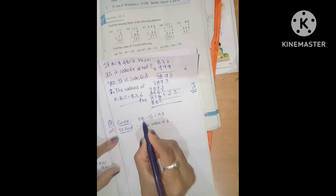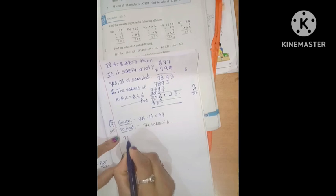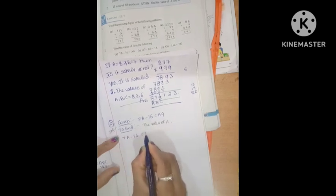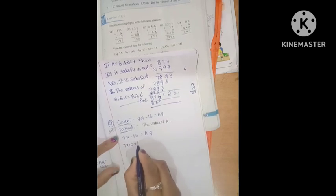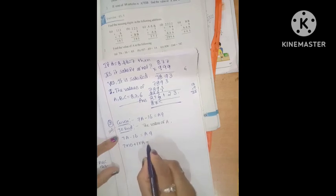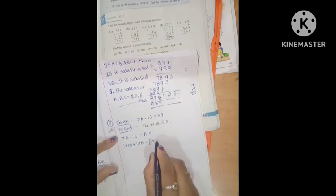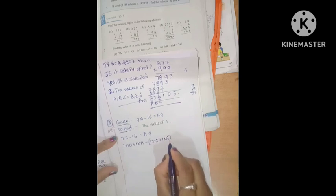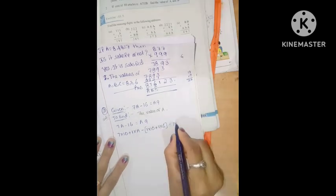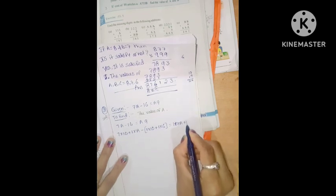Here, A is in the 1s place and 7 is in the 10s place. So 7A means 7 into 10 plus 1 into A. Next, 16 means 1 into 10 plus 1s place into 6. The RHS, A9, means 10 into A plus 1 into 9.